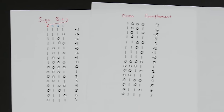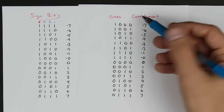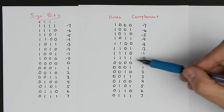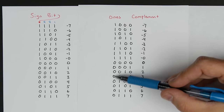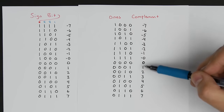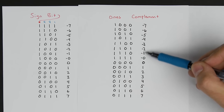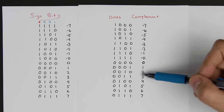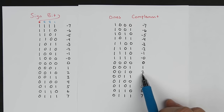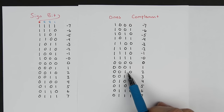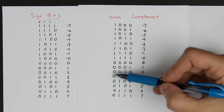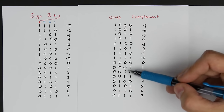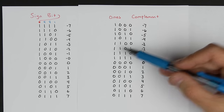Let's look at another approach called 1's complement. Everything from 0 to 7 is the same as before, with the first bit being 0 for positive numbers. For negative numbers, we flip all of the bits — we take the complement of all bits. So 2 is 0010, and negative 2 is 1101. For 5, which is 0101, negative 5 is 1010 — we flip each bit.